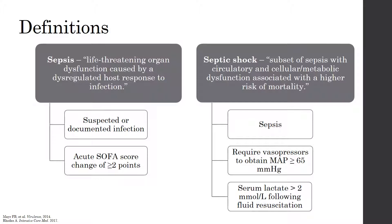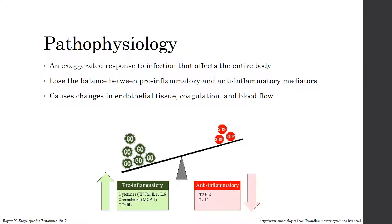Now we will go into the pathophysiology of the disease and how it occurs. Sepsis is an exaggerated response to infection that affects the entire body. This occurs because you have a change in the amount of pro-inflammatory and anti-inflammatory mediators in the body. Usually there is a balance between the two types of mediators. However, in sepsis, there is an increase in the cellular release of pro-inflammatory mediators, which causes changes in the endothelial tissue, coagulation, and blood flow.